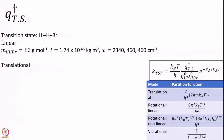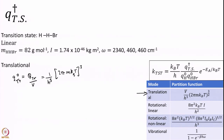Moving forward to the transition state, we will compute all three partition functions: translational, rotational, and vibrational. The translational partition function Q_tr° = (1/h³)(2π m k_B T)^(3/2), dividing by volume as always so volume cancels. We first need to calculate m, the total mass, which is the mass of HBr converted to kilograms: mass in g/mol × (1 kg/1000 g) × (1 mol / 6.022×10²³).